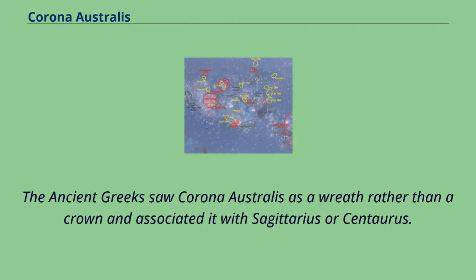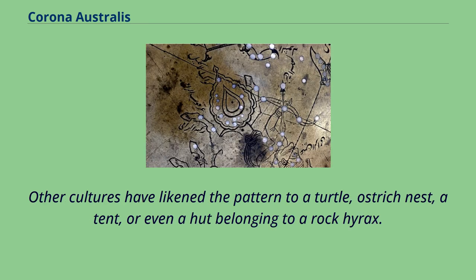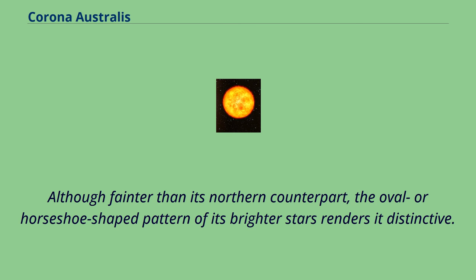The ancient Greeks saw Corona Australis as a wreath rather than a crown and associated it with Sagittarius or Centaurus. Other cultures have likened the pattern to a turtle, ostrich nest, a tent, or even a hut belonging to a rock hyrax. Although fainter than its northern counterpart, the oval or horseshoe-shaped pattern of its brighter stars renders it distinctive.